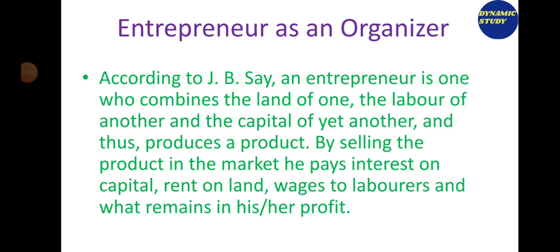J.B. Say, another French economist, said that an entrepreneur is a person who takes land on rent, hires laborers, and uses capital from others. Using all these resources, he creates a new product. After selling it in the market, he pays rent, pays wages to laborers, and pays interest on capital — and the remaining amount is his profit. The entrepreneur coordinates and organizes land, labor, and capital to earn profit, and is thus called a coordinator or organizer.